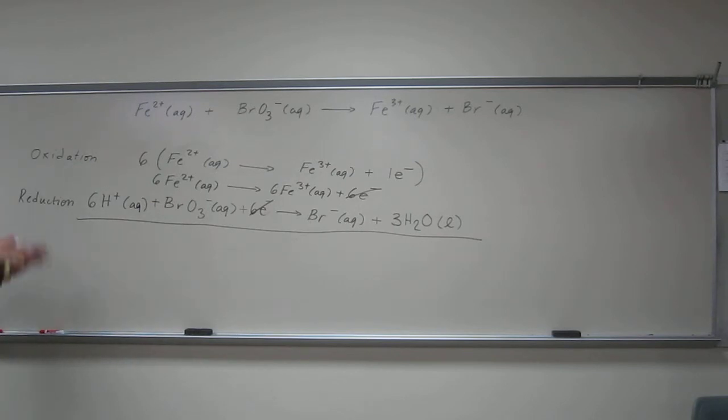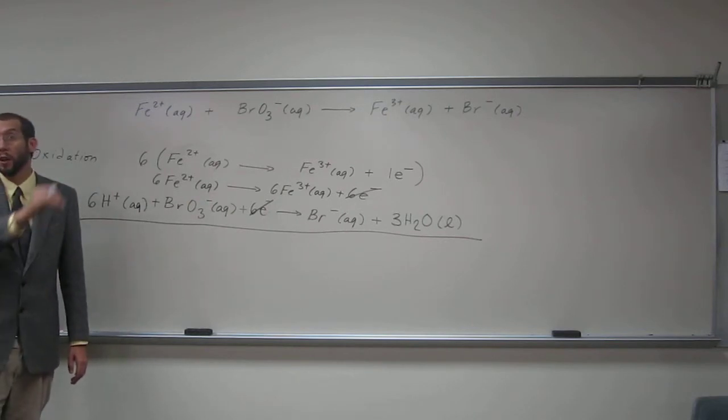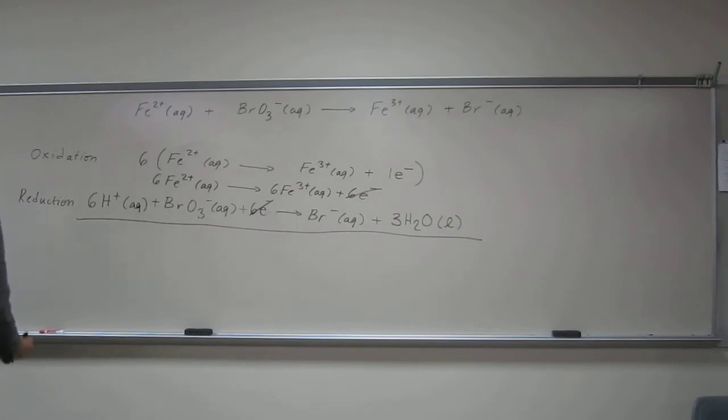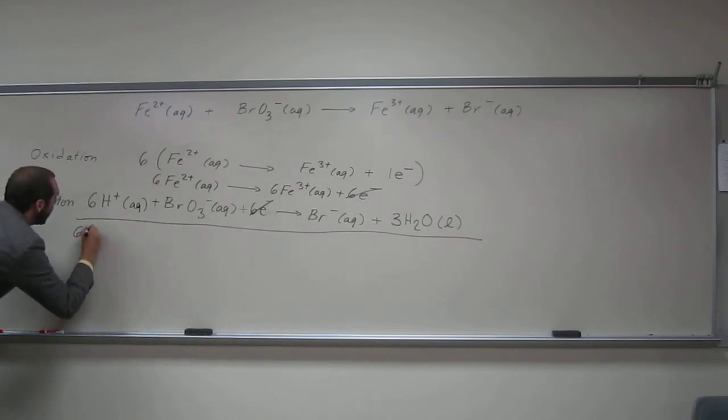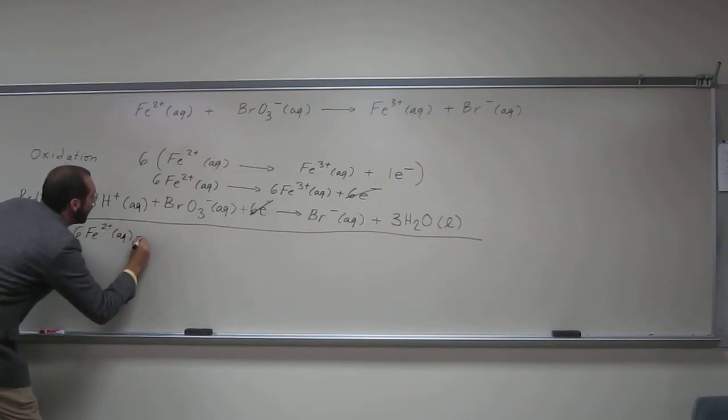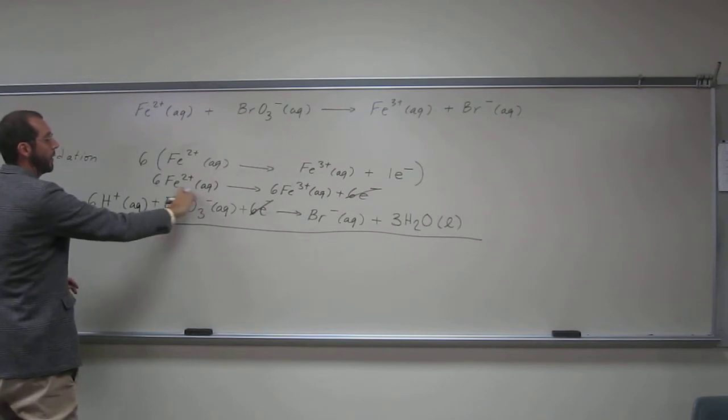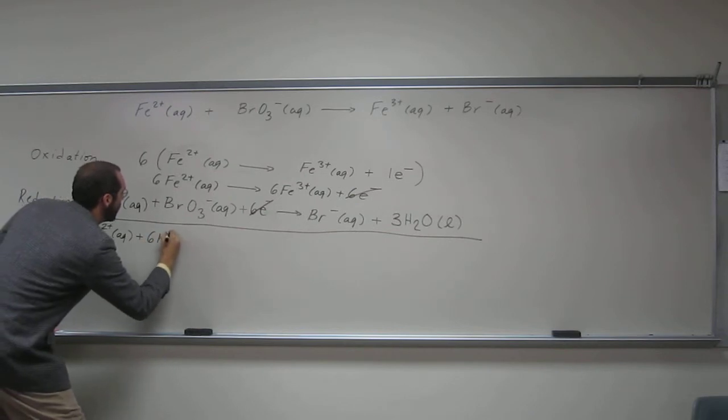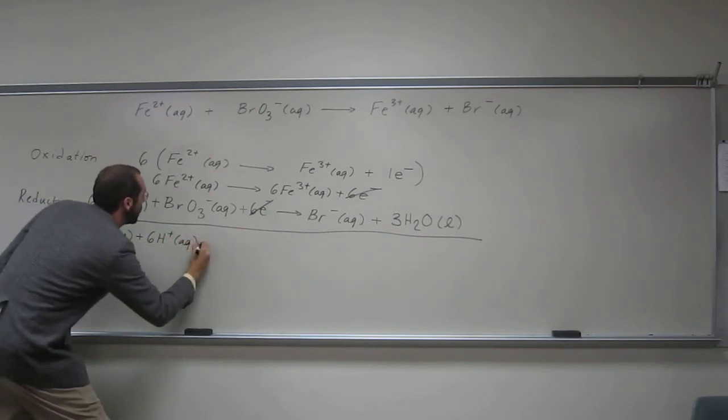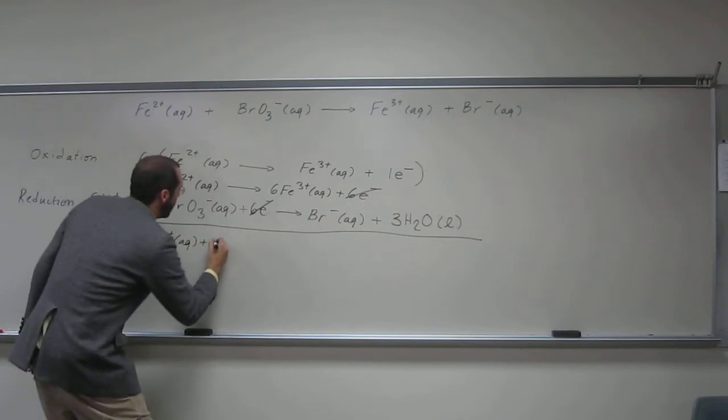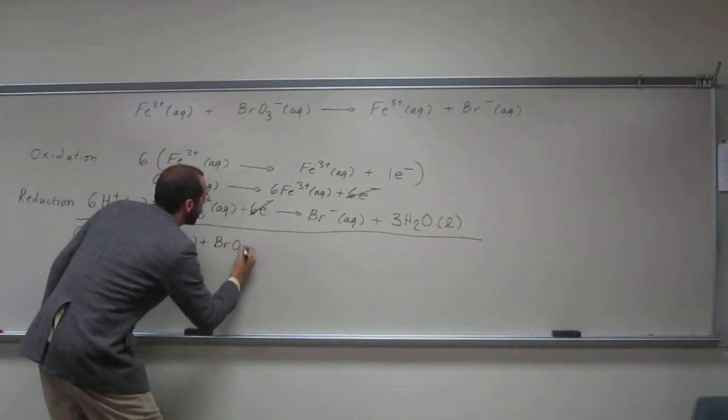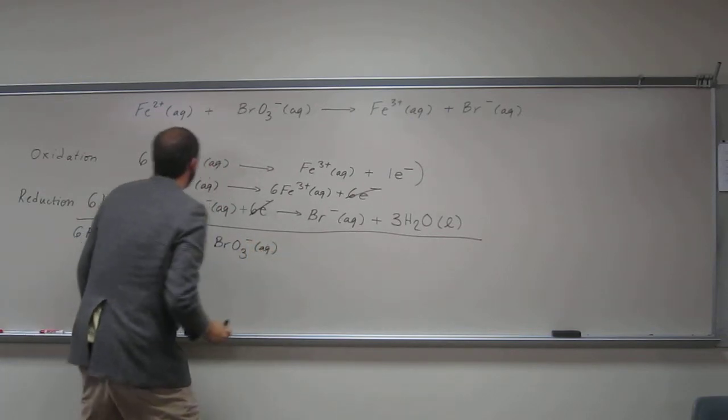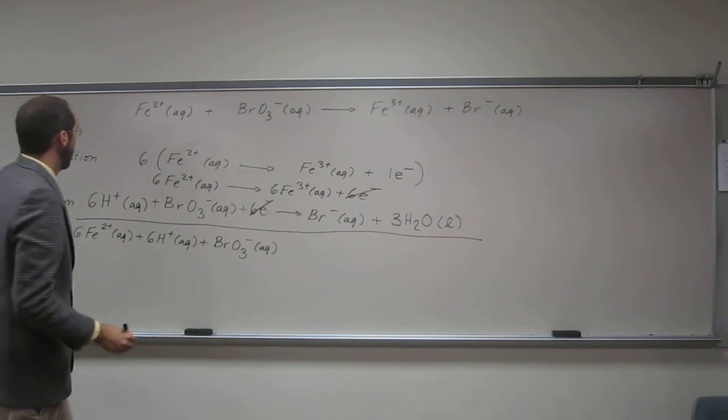Does it matter what order you put it in? It doesn't matter at all. Whichever one you like the best, or if it's a multiple choice test, whichever one it writes it out. So let's do it. 6 Fe²⁺ aqueous plus, so that's all of the reactants on the oxidation half reaction, so now let's do the reduction half reaction, 6 H⁺ aqueous plus BrO₃⁻ aqueous. So it looks like that's all of the reactants.